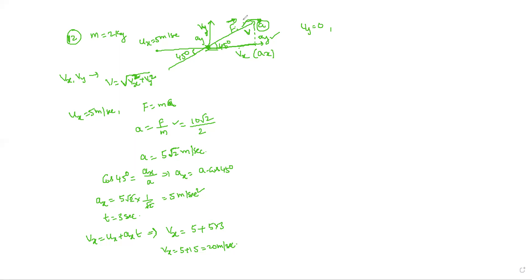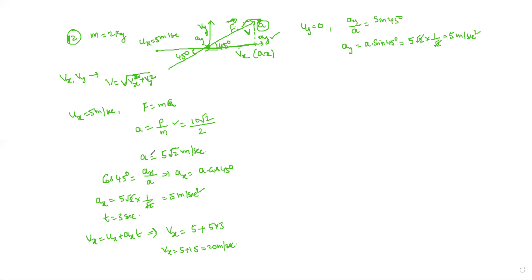For the vertical component: ay by a equals sin 45, so ay equals a into sin 45 degrees. Ay equals 5 root 2 into sin 45, which is 5 root 2 into 1 by root 2, giving ay equals 5 meters per second squared. So ax equals ay equals 5 meters per second squared.